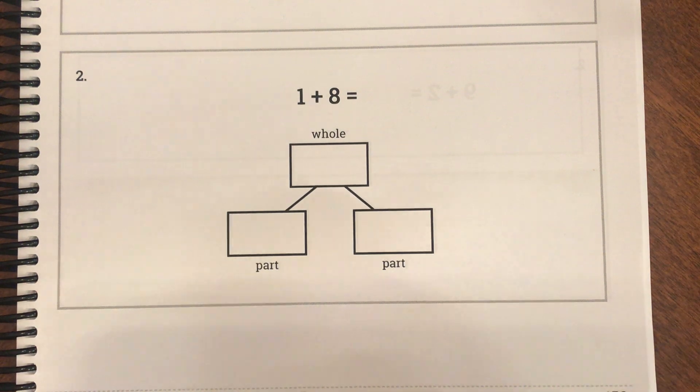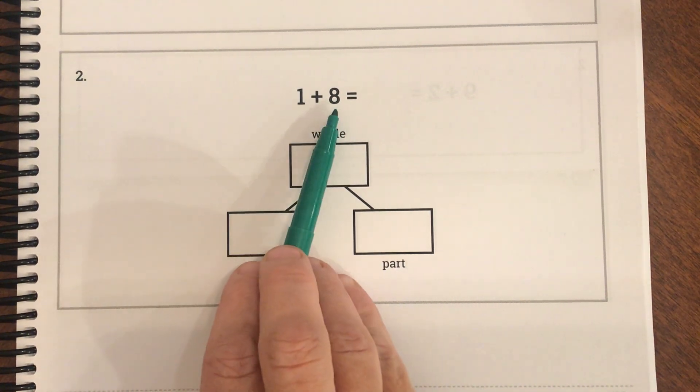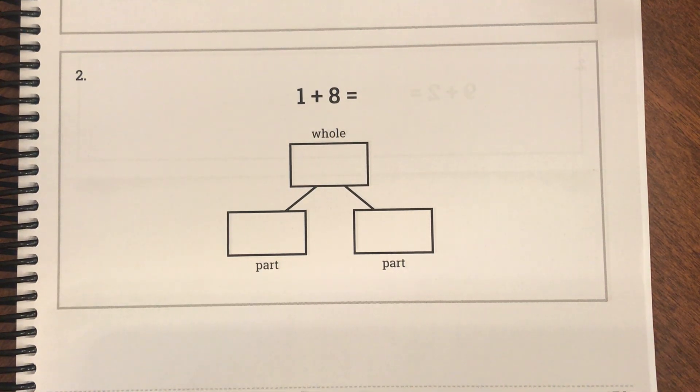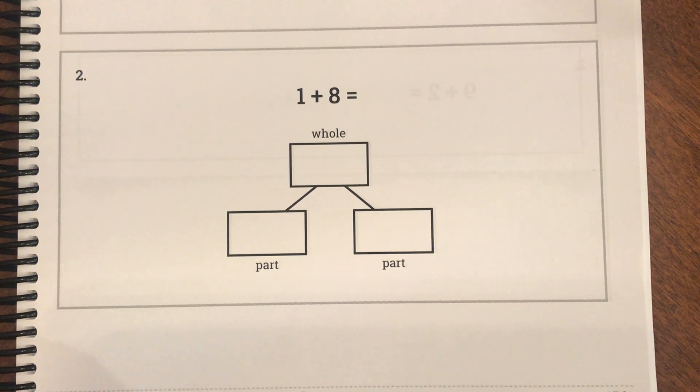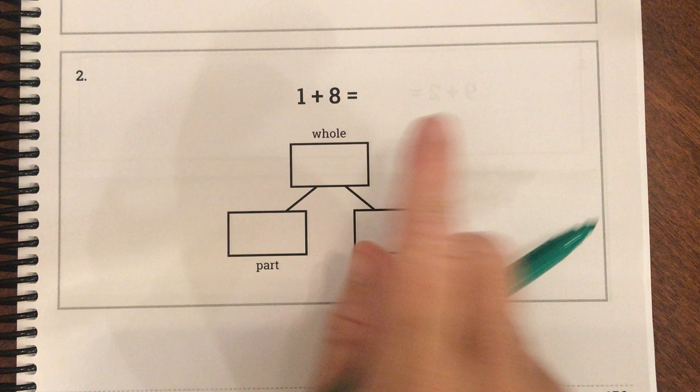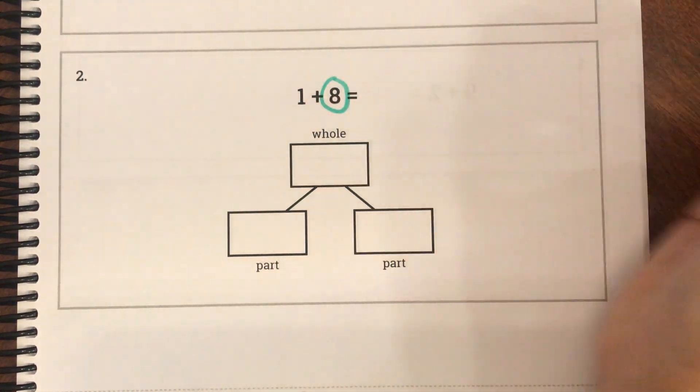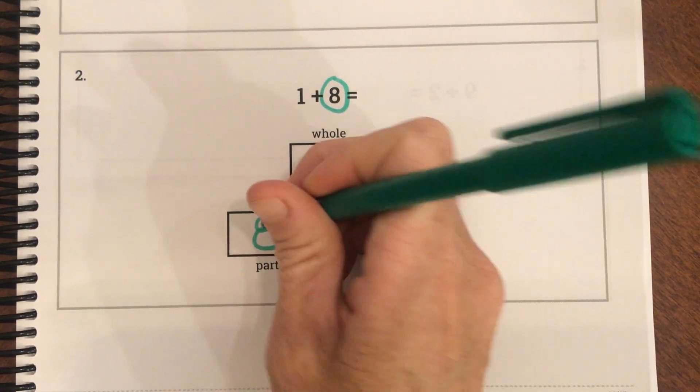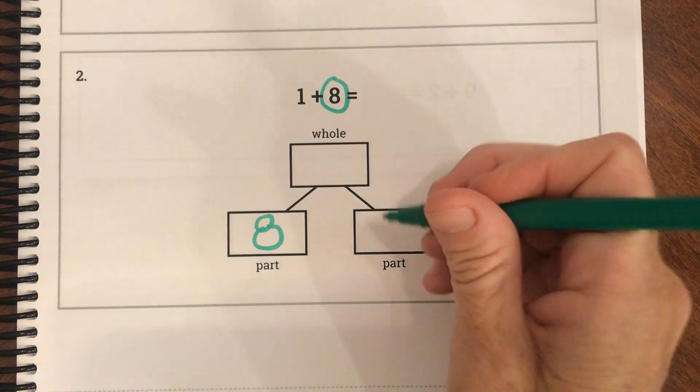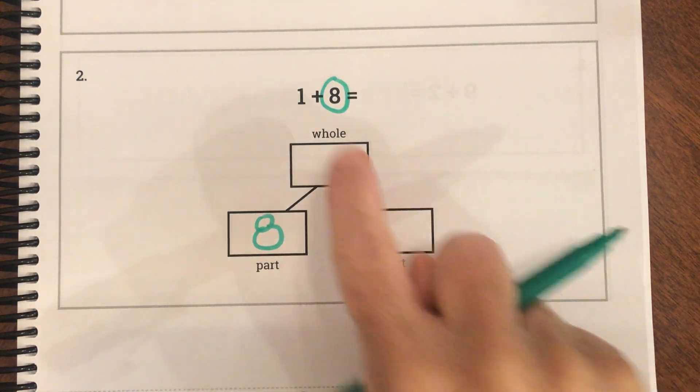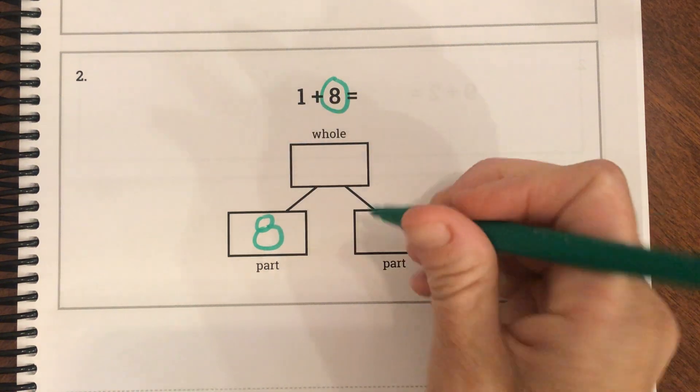This time our equation says 1 plus 8. So we're going to first circle our largest addend or our greater addend. So 1 or 8. Which one's greater? 8. And that's going to be our first part. Then we're going to put our second addend here. So how many dots should we draw? 1.